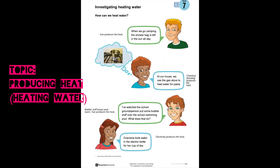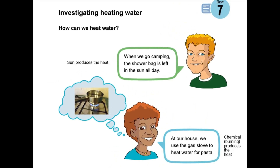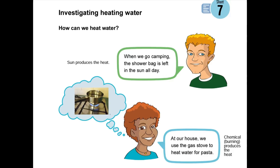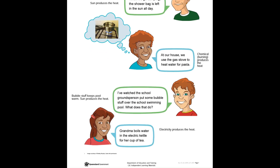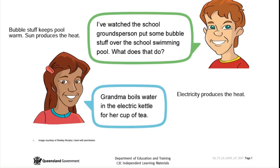I learned about producing heat and heating water. Heat energy is used for many different things. We can even produce heat in different ways for the exact same task. To heat water, we can use chemical burning, the sun, and electricity.